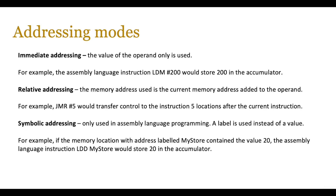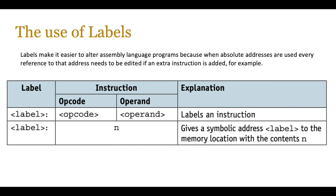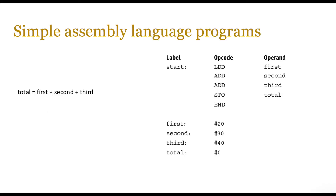Symbolic addressing is only used in assembly language programming and uses a label instead of a value. You can take a memory location with address 200, label it 'my_store,' and then simply say LDD my_store — it knows to go to that label, which is address 200, and take the value 20 from there into the accumulator. Using labels makes it easier to alter assembly language programs, because when absolute addresses are used, every reference to that address needs to be edited if an extra instruction is added. For example, if you use addresses 200, 201, 202, 203 and later need to change them to 300, 301, 302, 303 — or any other range — you'd have to manually change every occurrence throughout the program.